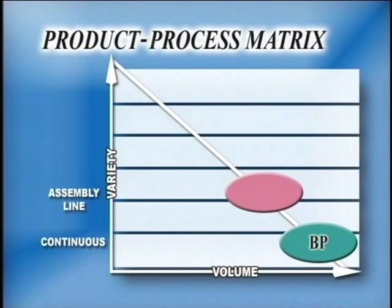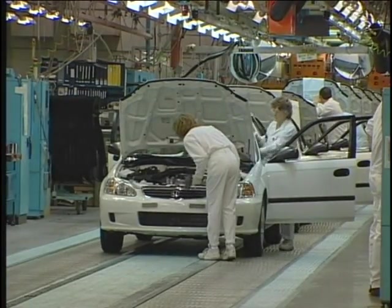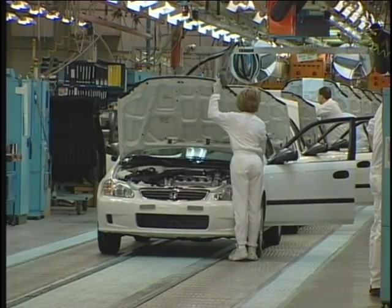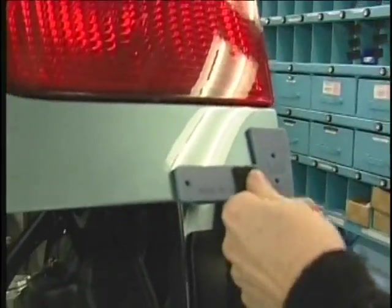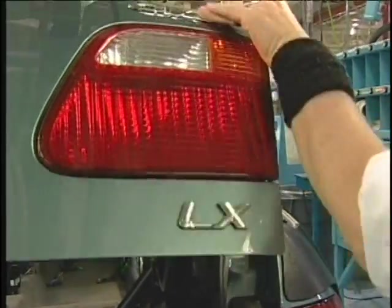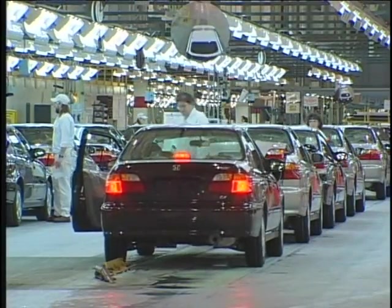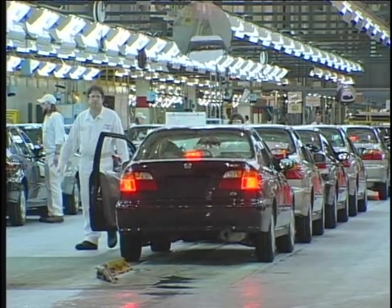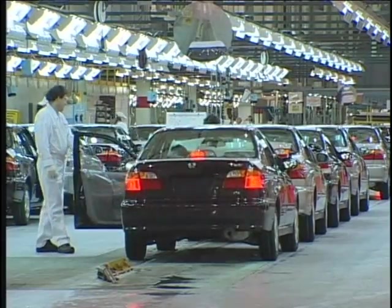This is also referred to as mass production. Most consumer goods are mass produced. Honda of America uses a repetitive process in their operating plant in Marysville, Ohio. At this plant, Honda produces a large number of only a few different models of their popular Civic line of cars. This plant alone produces an average of 20,000 cars every month — nearly 250,000 for each model year.